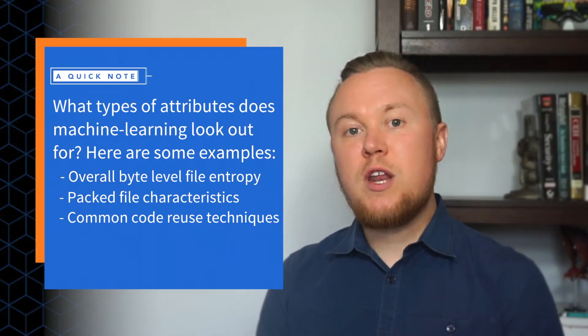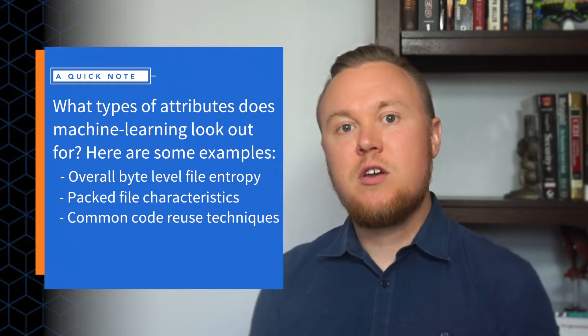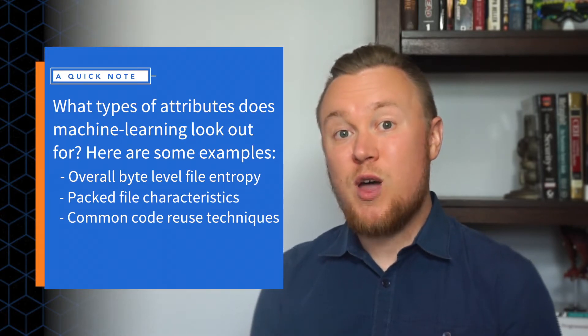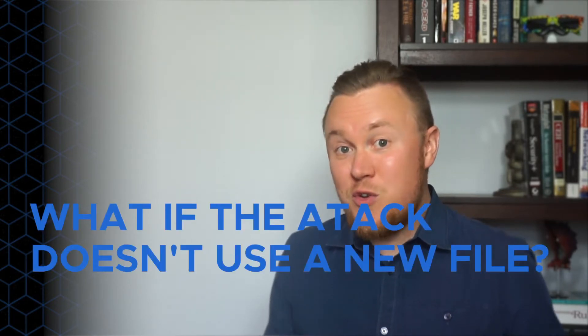Machine learning is laser-focused on solving the known conundrum: how do I stop a bad file before I know that it's bad? While using advanced algorithms created through supervised learning using large training data sets, this approach is able to analyze a file really quickly. If the new file looks, smells, and acts malicious, machine learning can stop it because it probably is. But again, we have a flaw in the system that misses a wide range of attacks — what if the attack doesn't use a new file at all?